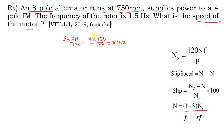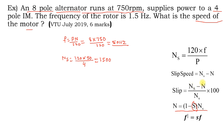Now that we have 50 Hz, we can find the synchronous speed of the induction motor: ns = 120 × 50 / 4 = 1500 rpm. Slip cannot be calculated directly from the speed formula since rotor speed is not given.